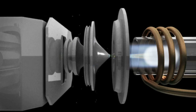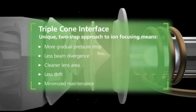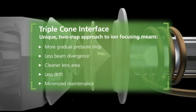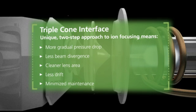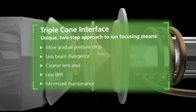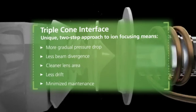The only one of its kind, this triple cone design offers an unprecedented level of beam focusing by removing the greatest quantity of unionized material, keeping the inside of the mass spectrometer clean and giving the instrument an unsurpassed level of stability.